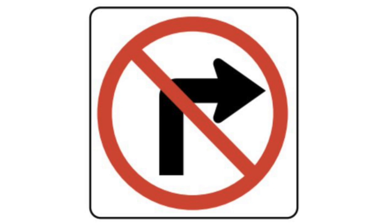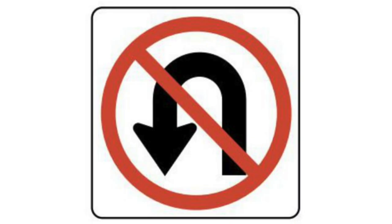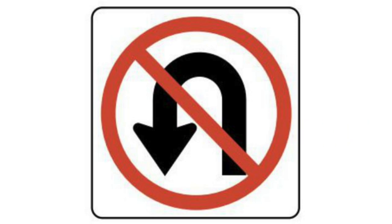No right turn. This sign is used to indicate a street that you cannot turn right onto. Most often you will see this in downtown areas. No left turn. This sign is used to indicate a street that you cannot turn left onto. No U-turn. This indicates a U-turn is not legal in an area where this sign is posted. Typically it is because the area has too much traffic — for instance, oncoming traffic as well as traffic coming out of a roadside shopping center, etc.